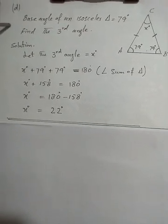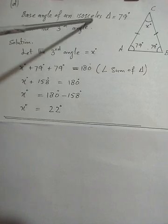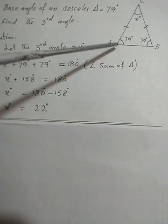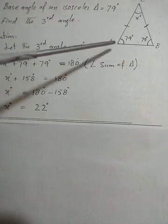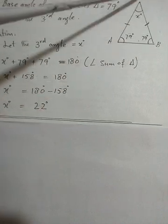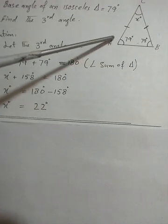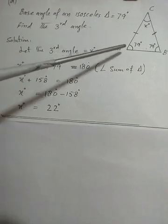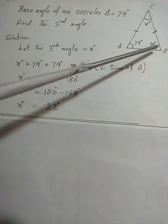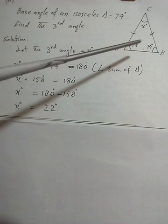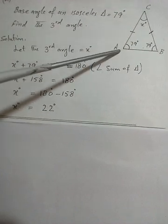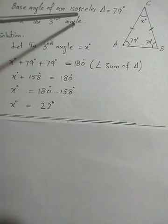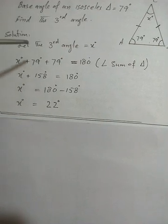Now part D of the question: the base angle of an isosceles triangle is 79 degrees. We have labeled the triangle ABC. The two sides AC and BC are equal in length, so this triangle is isosceles. Since one base angle is 79 degrees, angle B opposite to side AC is 79 degrees, and angle A opposite to side BC is also 79 degrees.